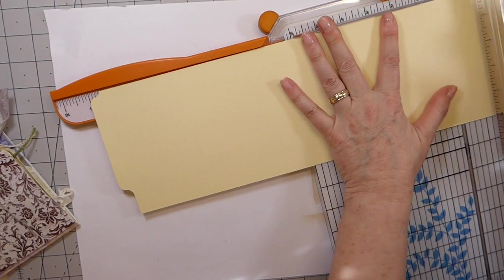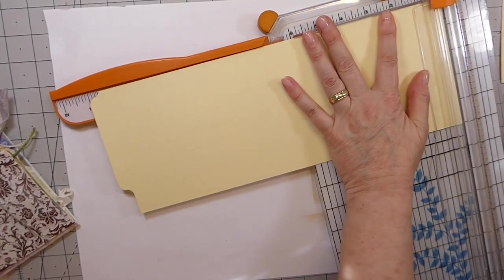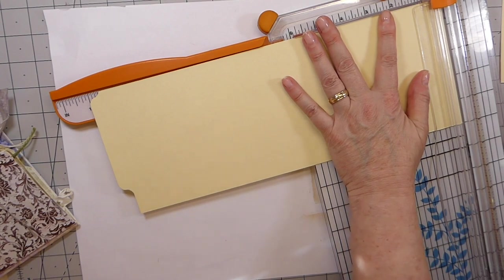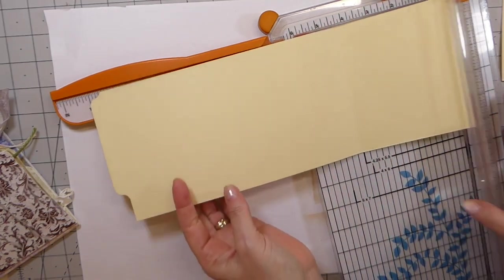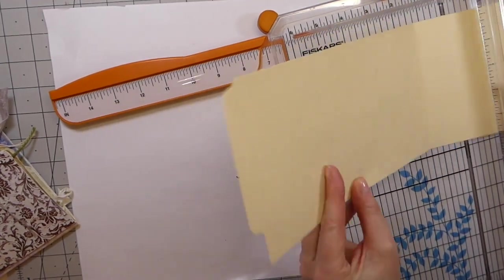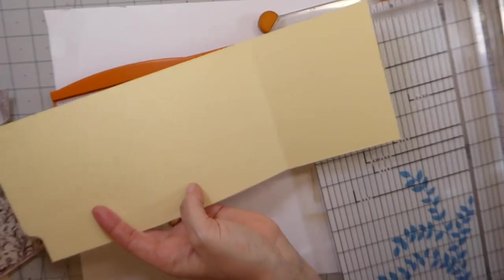And then make sure you've got that nice and even and just go ahead and cut that off. And now with this piece, because this is going to form—hang on to that, that's going to be the pocket on the back.